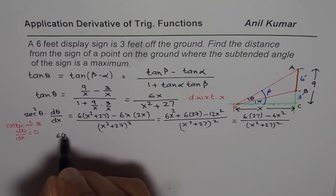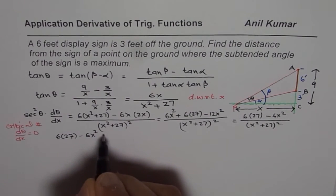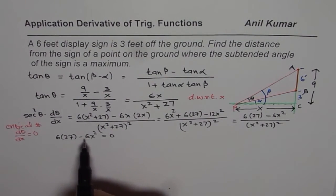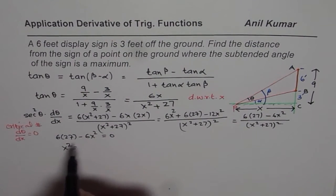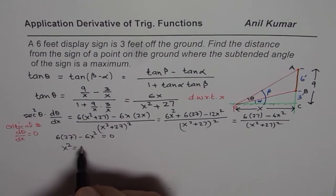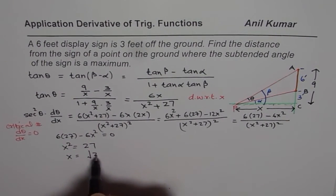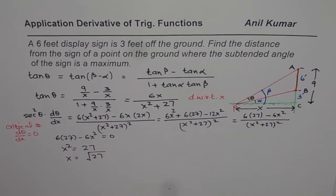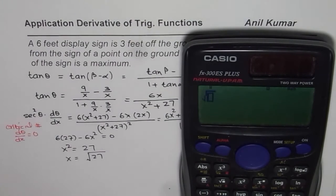That means we are saying 6 times 27 minus 6X square equals to 0, right? So we can now solve for X. So we get X square equals to 6 and 6 cancel, 27, right? And X will be square root of 27. Now since X is the distance, we will take only the positive value. So that is our critical number. So we can approximately find this number, which is square root of 27.